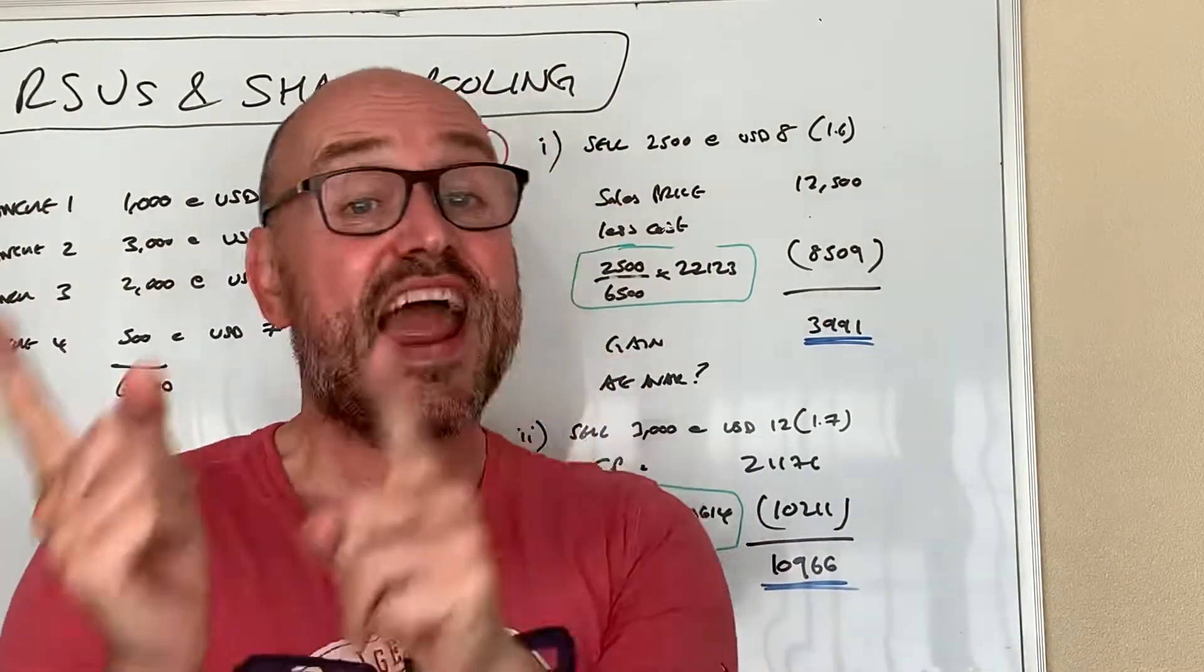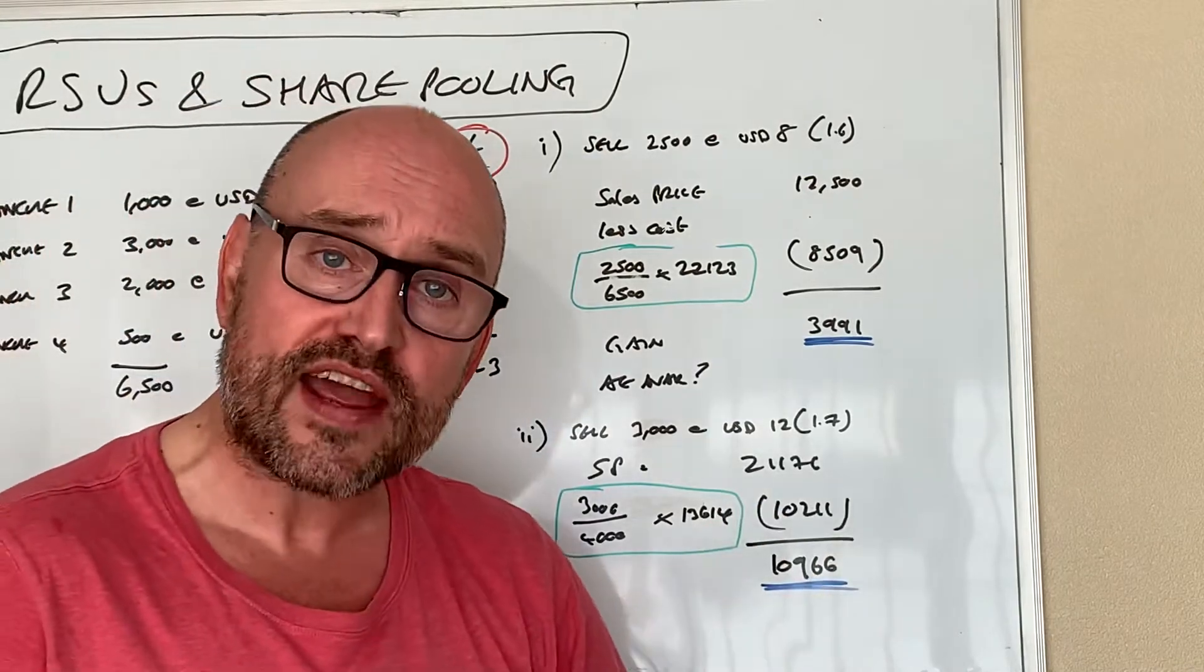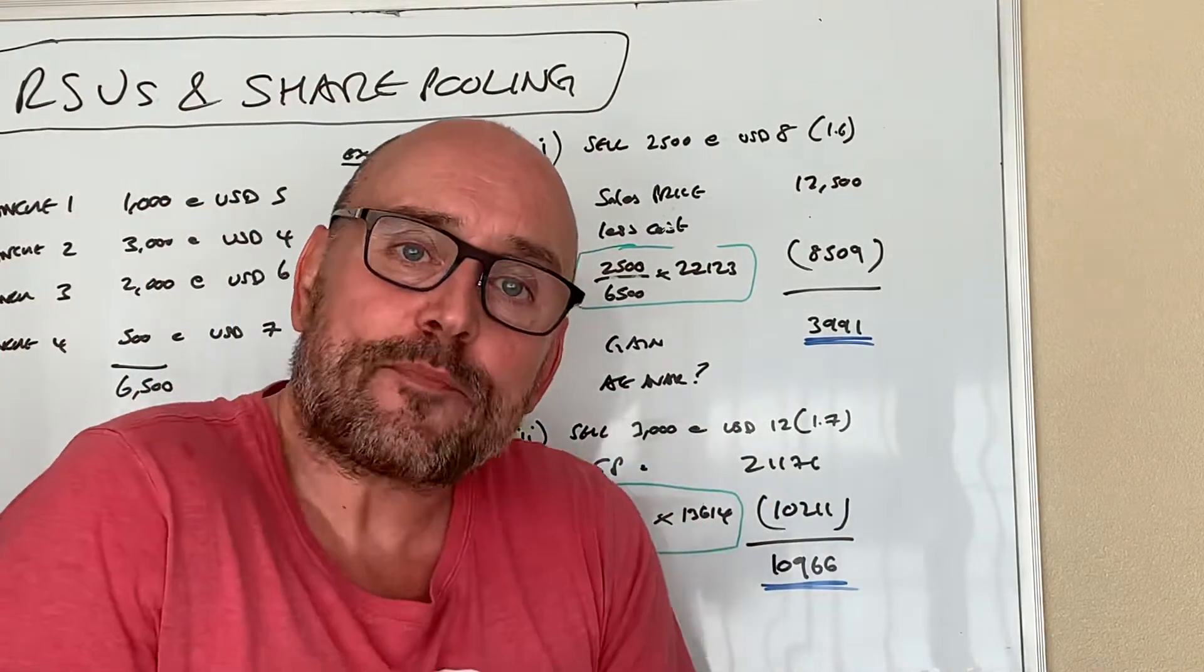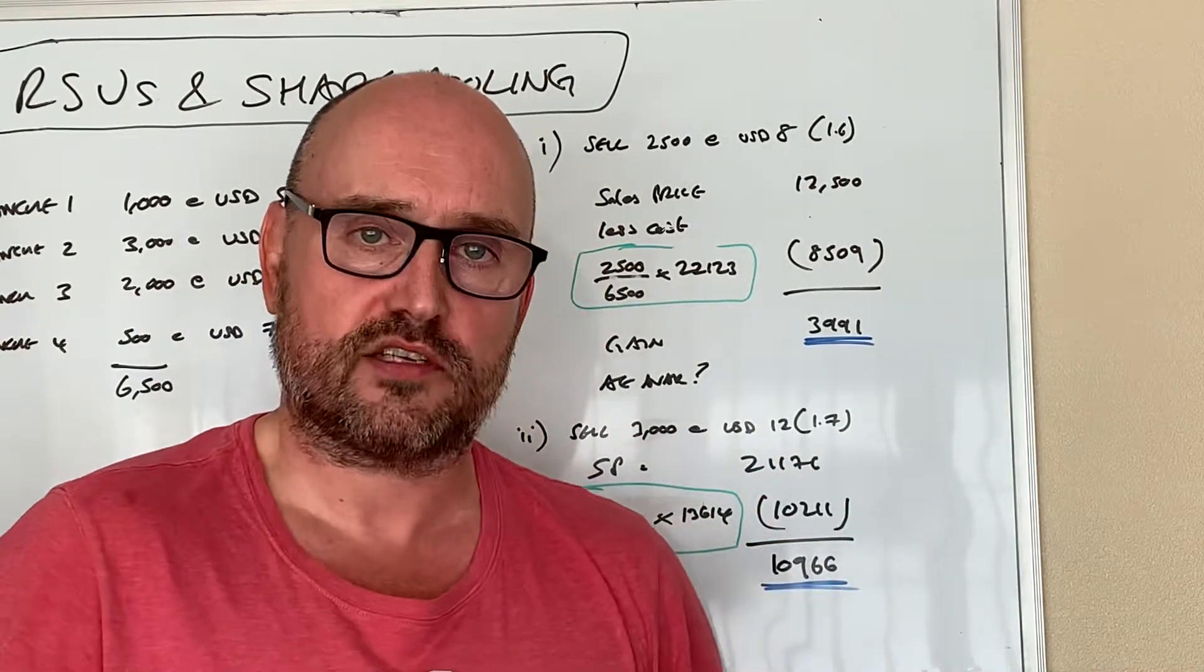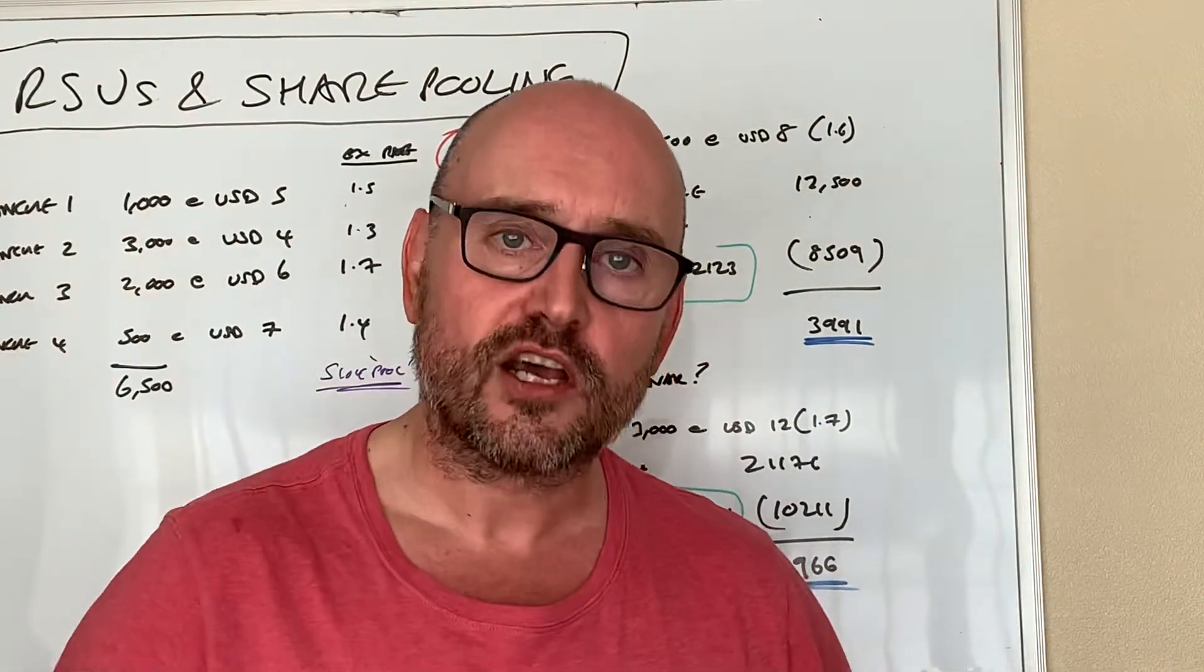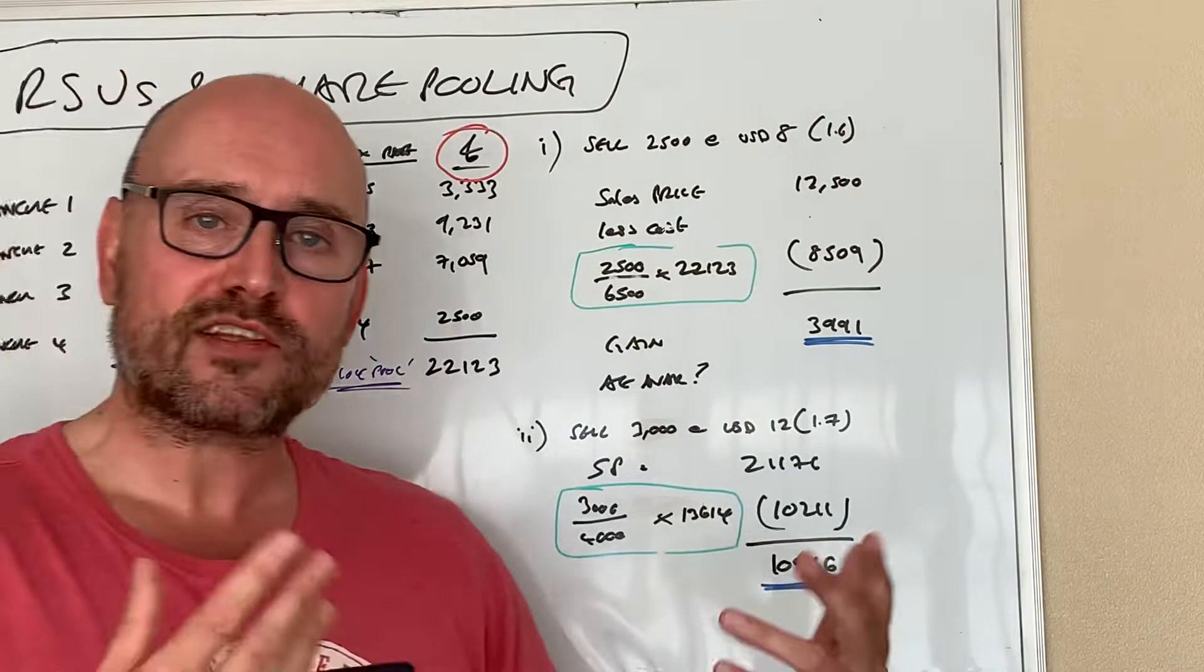The sales price, the amount that he's going to get on a sterling basis, is just over twenty-one thousand for three thousand shares. And again for capital gains we need to determine what is the cost price.